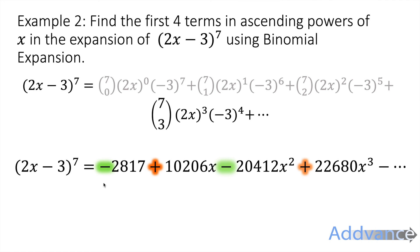An interesting pattern: when you have a positive and a negative in the brackets, you'll get alternating signs — minus, positive, minus, positive — and that pattern continues throughout. It's a good way to check you're doing the right thing by watching for that alternating pattern.